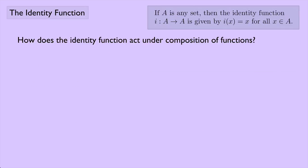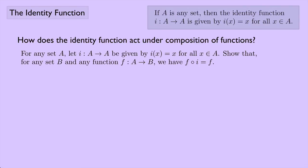How does the identity function act under composition of functions? Well, let's try and prove this statement. For any set A, let i be the identity function from A to A, given by i of x equals x for all elements x in A. That's just the definition. Show that for any set B and any function f that goes from A to B, we have f composed with i equal to f.